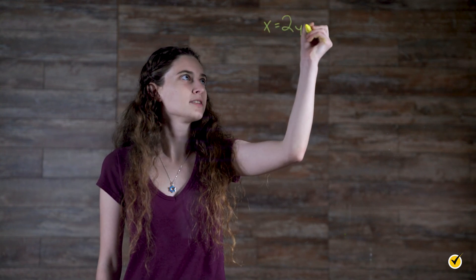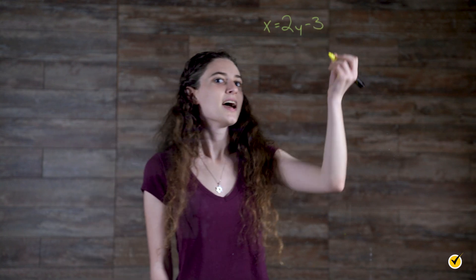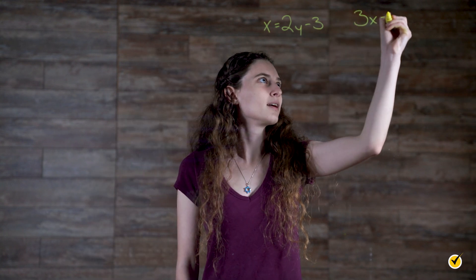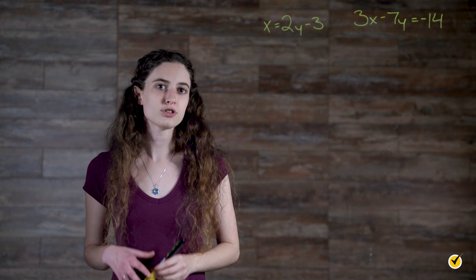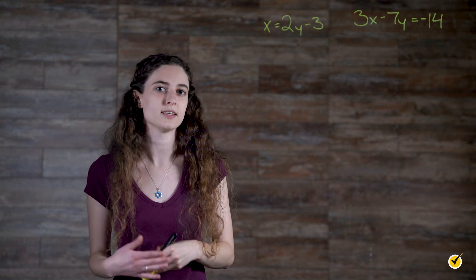Solve the system of equations. x equals 2y minus 3, and 3x minus 7y equals negative 14. Since the first equation tells us the value of x, we can actually substitute this for x in the second equation using parentheses.